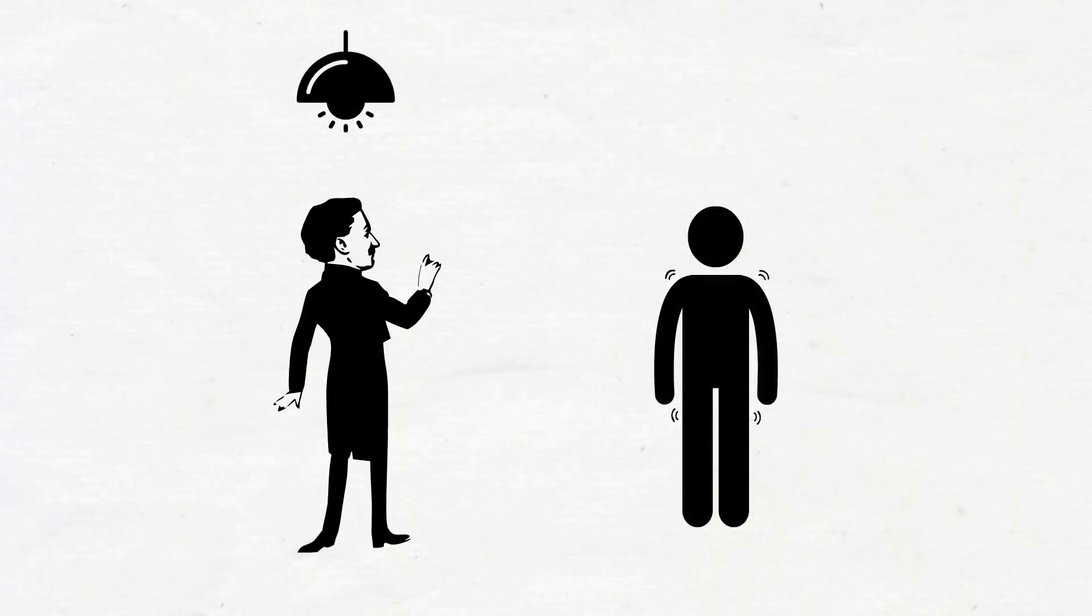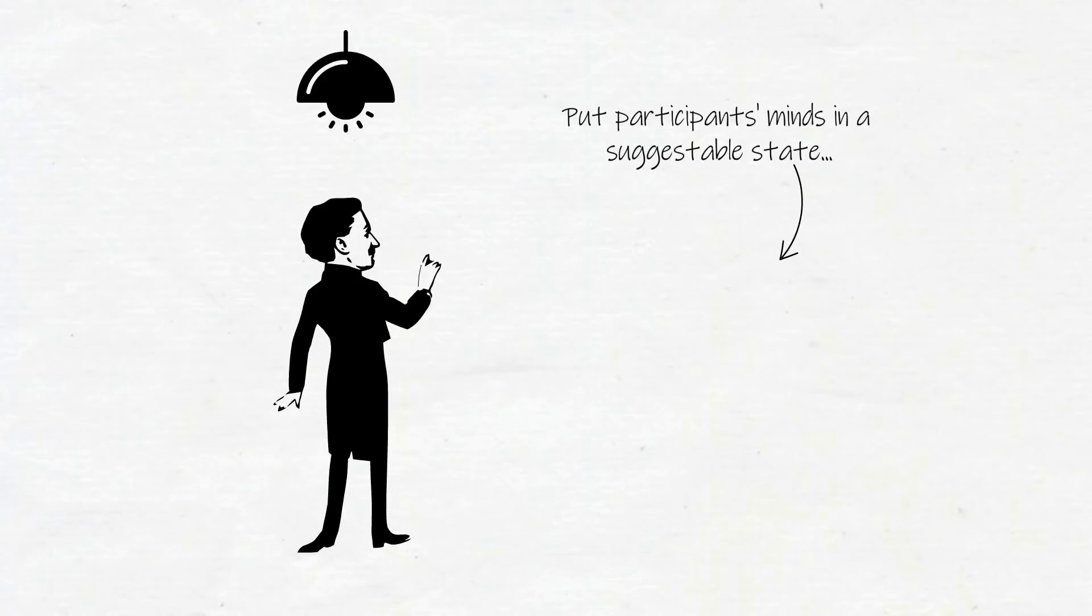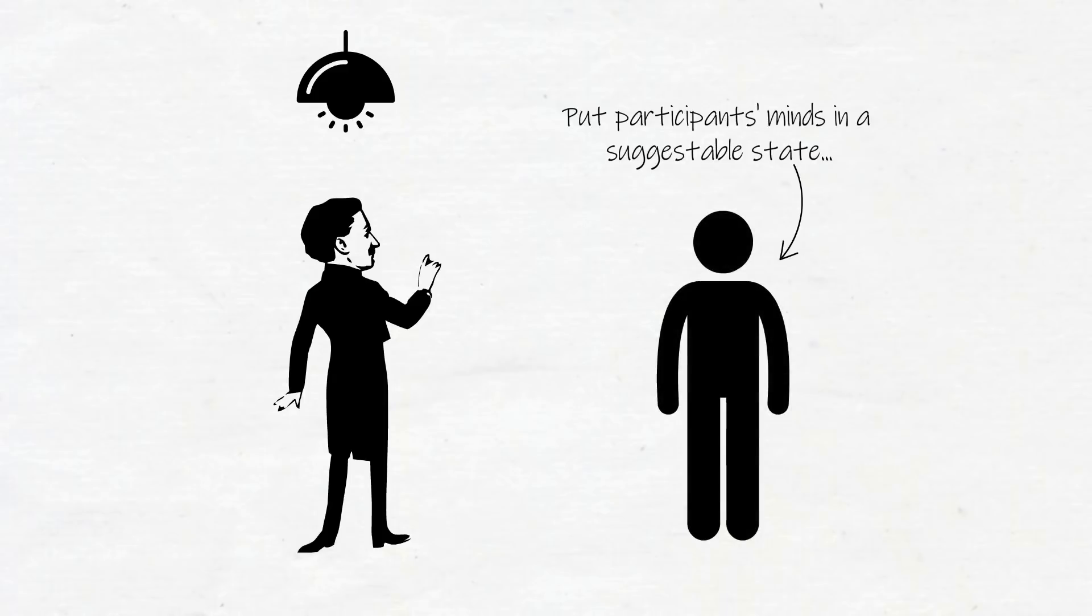Their goal is to put their participants' minds in a suggestible state, more open to accept their instructions. Because tension in the body is a signal to the nervous system to reject incoming information. But when you release tension, you become more open and willing to believe information from people around you and your own mind.